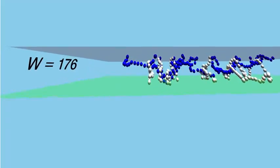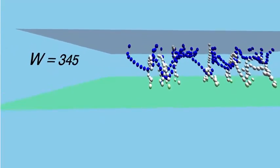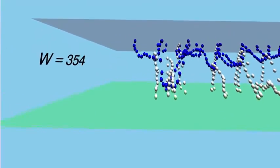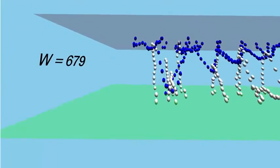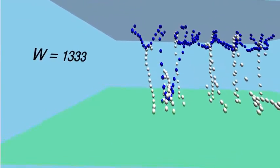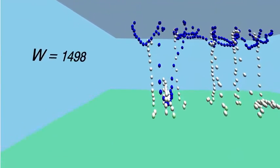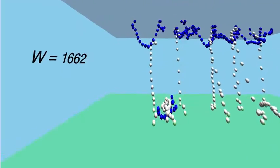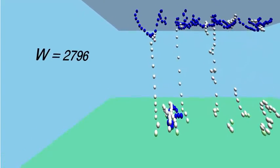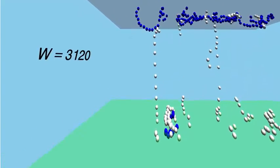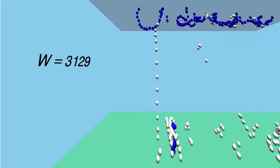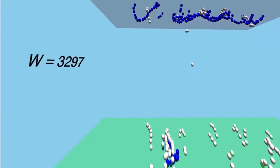Nothing much happens at first, and then these tangled chains start pulling on each other, stretching the chemical bonds — stretching all over — until one of them breaks. The fact that you have to pull so many means that you get a big increase in the adhesion force. We've got a work of adhesion of three thousand.